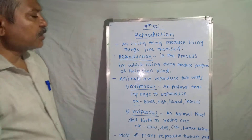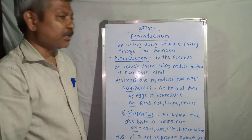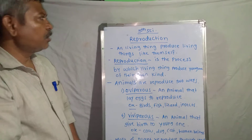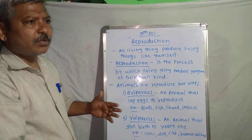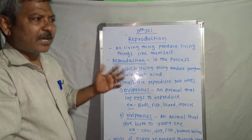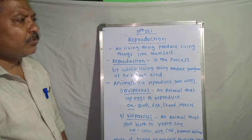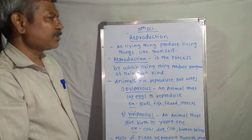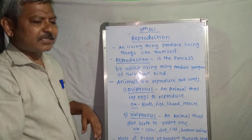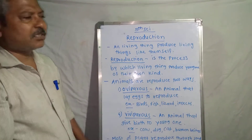Hi friends! When we discuss the characteristics of living things, we discuss that living things need food, living things breathe, living things move, living things grow, and living things have sensation. These are the few characters we studied in earlier class. Now in this class we study the next important character of living things.